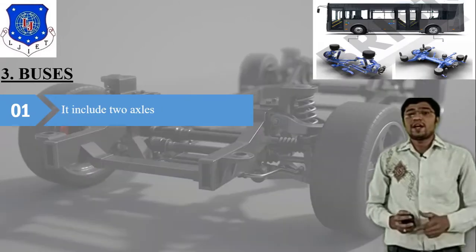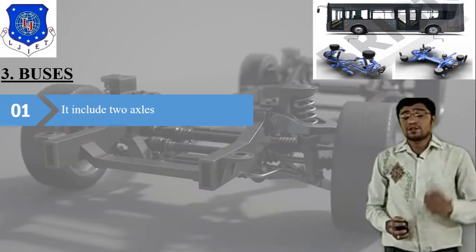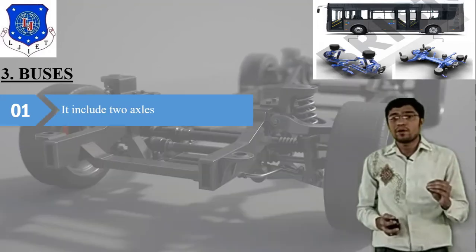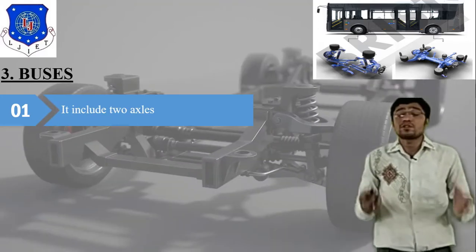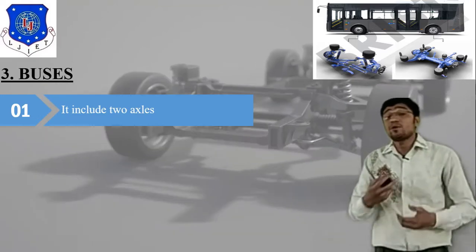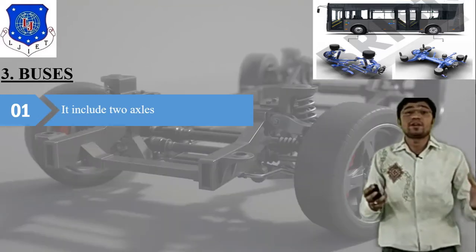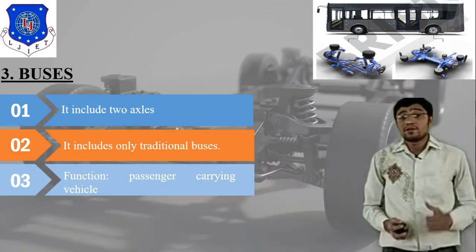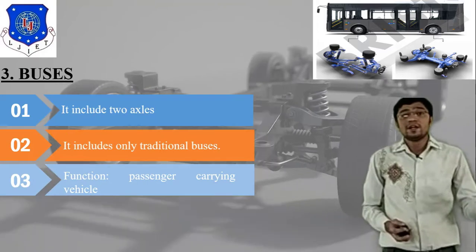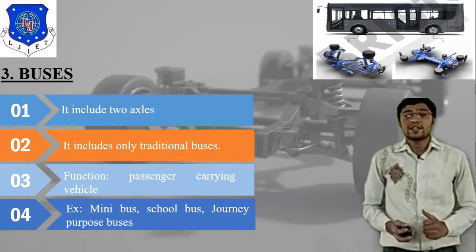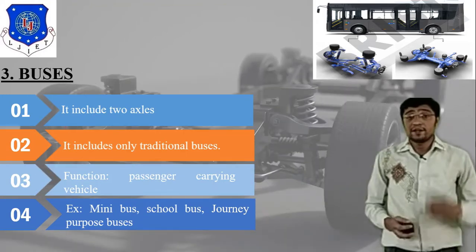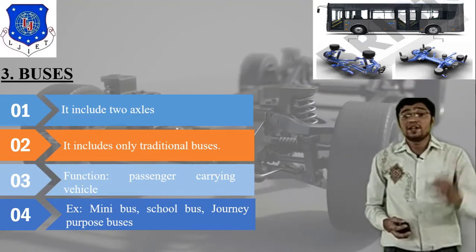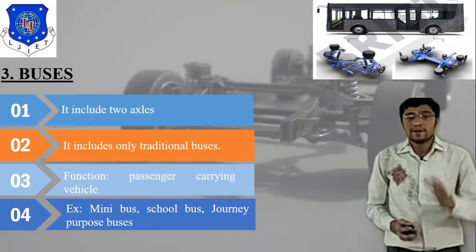The third type is bus. It includes two axles — a rod or shaft connecting to the wheel that rotates and supports the vehicle weight. According to passenger capacity we classify different types of vehicle body. It includes traditional buses, and its function is passenger-carrying for long or short distance. Examples include minibus, school bus, and journey-purpose bus.